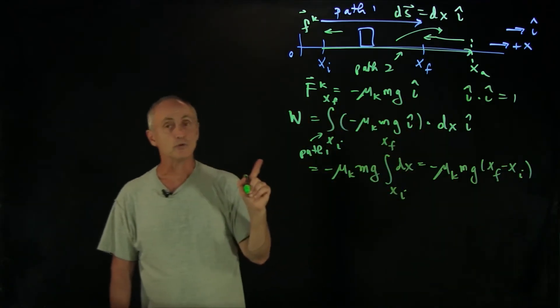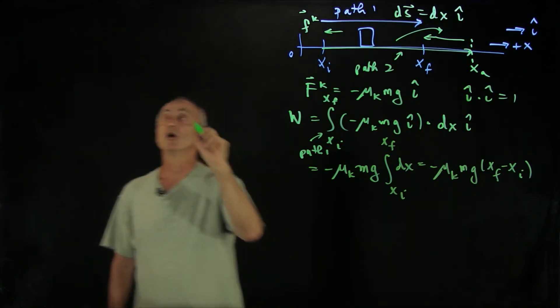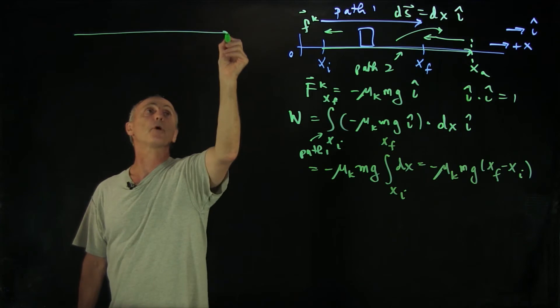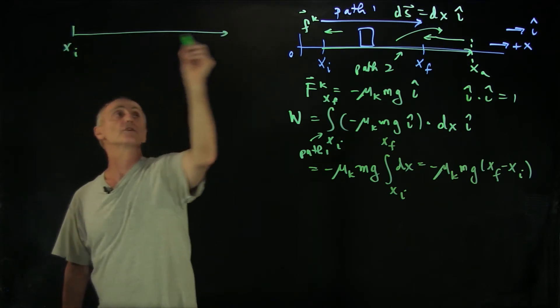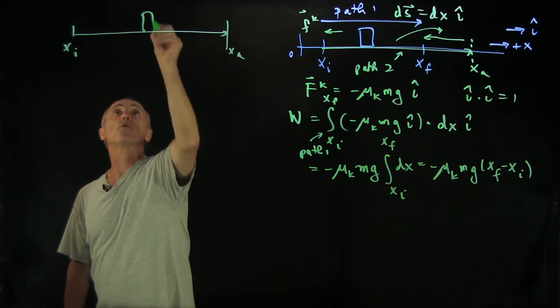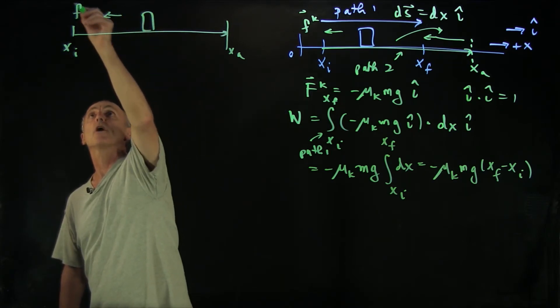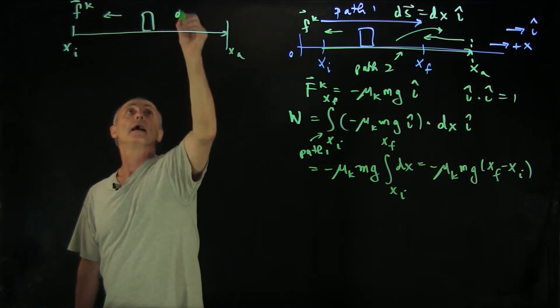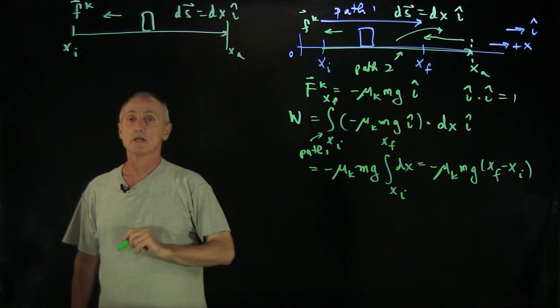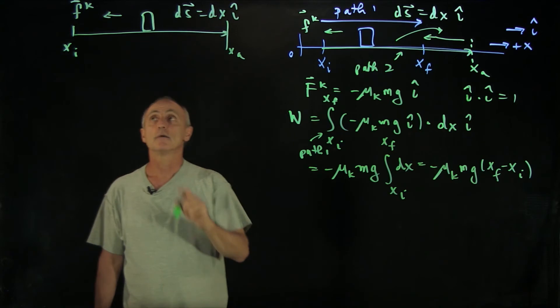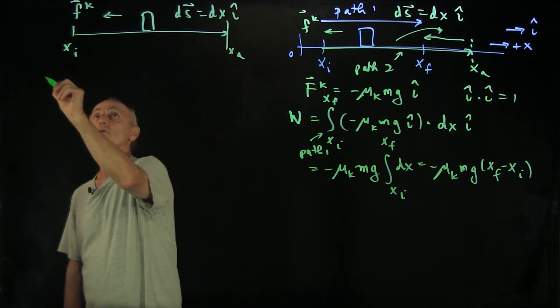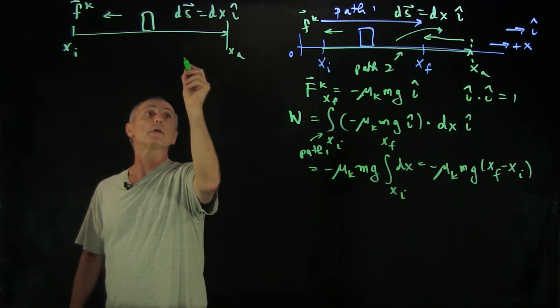Now for path two, we have two separate integrals. For path two, we'll just show the first part, where we're going from x_initial to x_a. The friction force is opposing the motion. We always just write dx in terms of the coordinate system, dx i hat, because the signs show up in the endpoints of the integral.